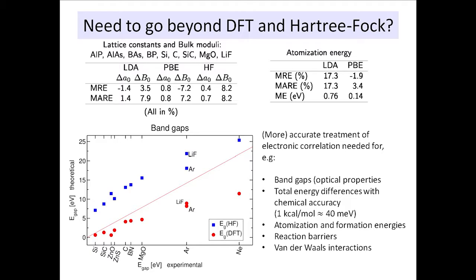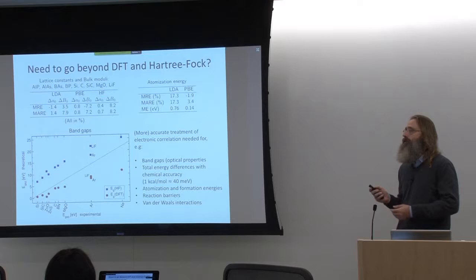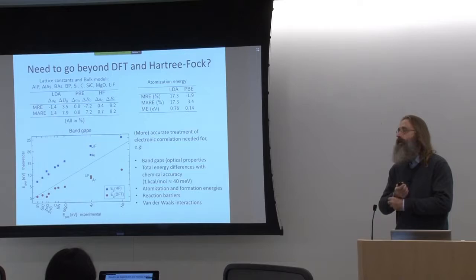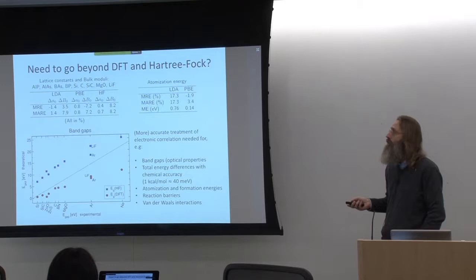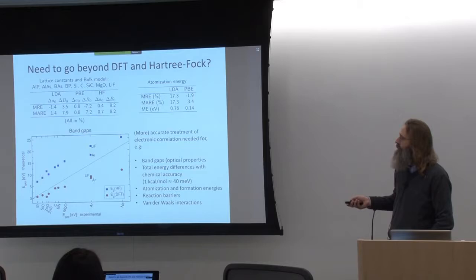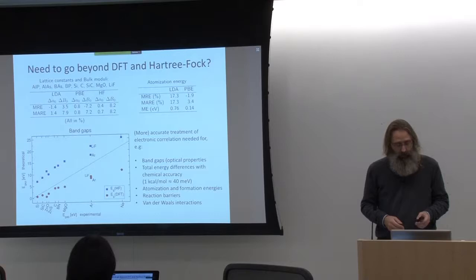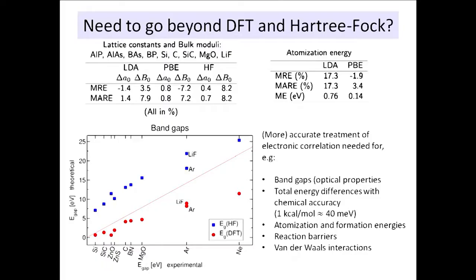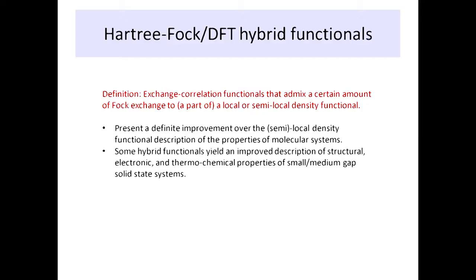Other arguments to go beyond DFT are: band gaps, as mentioned; also in DFT our description of total energies and total energy differences — the energetics of chemical reactions, reaction barriers, reaction enthalpies — are definitely not at the level of comparison to experiment that we would like. One other thing missing in DFT, but unfortunately still not addressed by hybrid functional theory, is that van der Waals interactions are missing. Hybrid functionals are a first step beyond DFT in that sense.